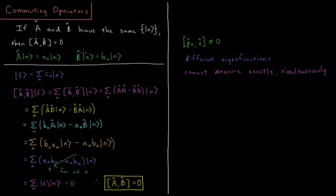For B, we have B acting on N gives the eigenvalue BN. For the same eigenfunction N, there's a set of those which constitute the eigenfunctions of A and B.